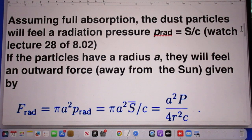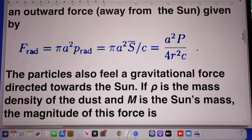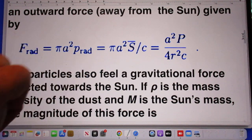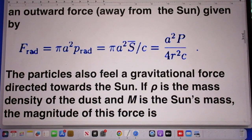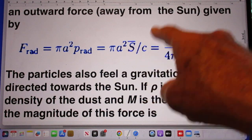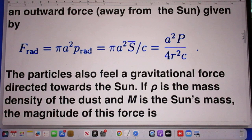If we assume full absorption, so that the photons are fully absorbed by the dust particles, then the dust particles will feel a radiation pressure, which is the pointing vector divided by C. You may want to watch my lecture 28 of 802. If the particles have a radius A, they will feel an outward force away from the sun given by this equation. It is obviously pi A square by that radiation pressure. And since there is full absorption, we get here S divided by C.